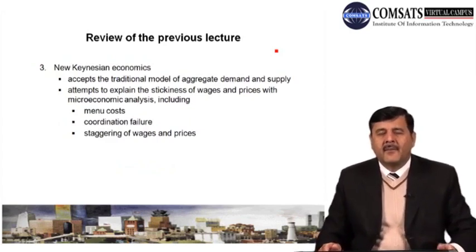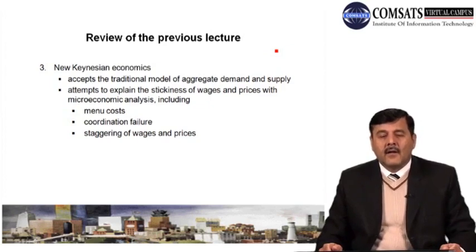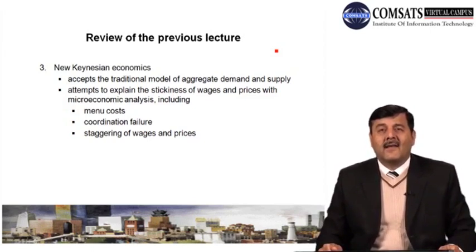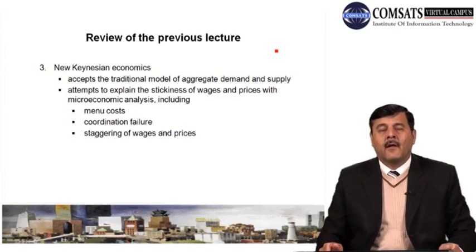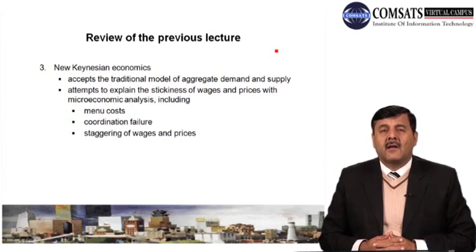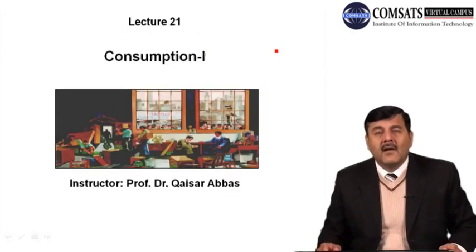The second business cycle theory we discussed is New Keynesian economics. New Keynesian economists accept the traditional aggregate demand and aggregate supply model, and attempt to explain the stickiness of prices and wages using microeconomic analysis, including menu costs, coordination failures, and staggering of wages and prices. They believe economic disturbances can be addressed through aggregate demand and aggregate supply.